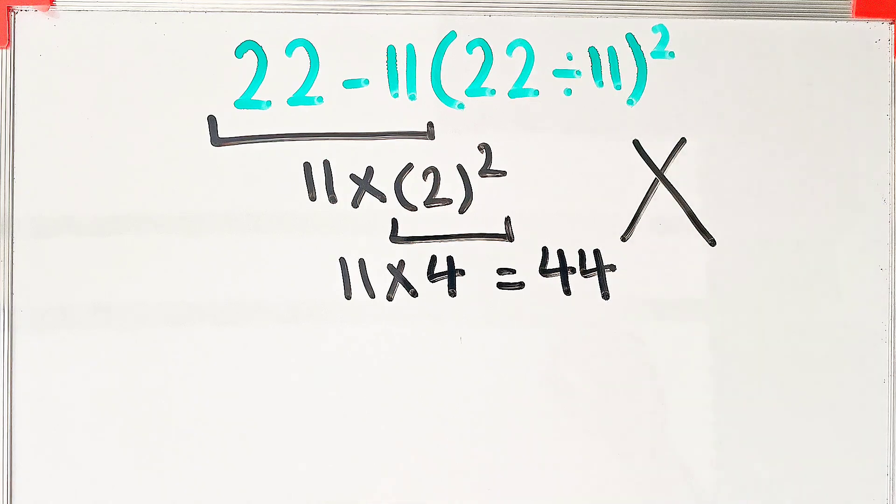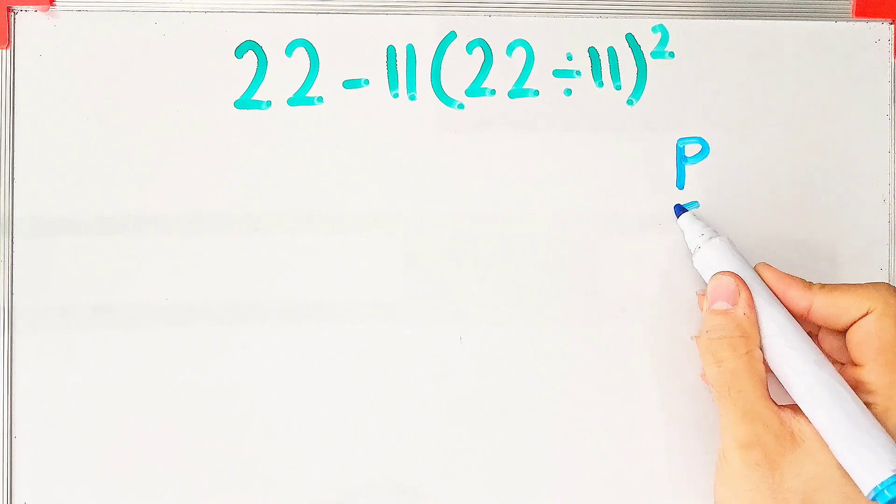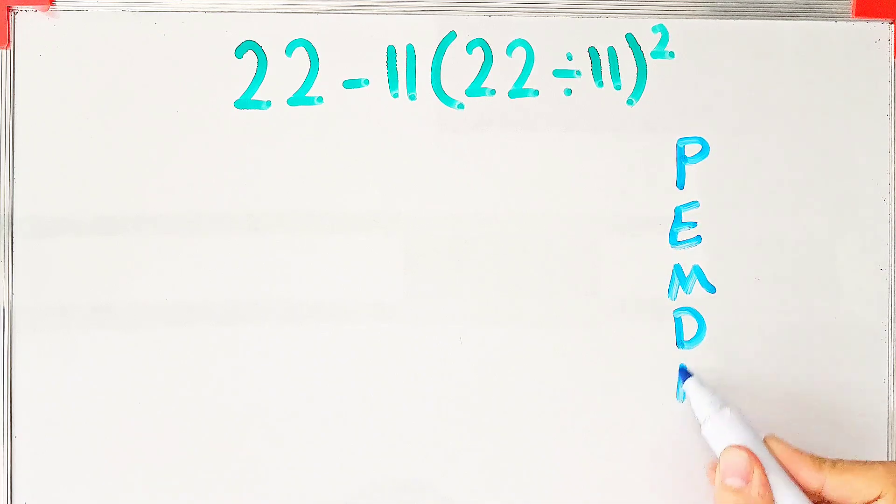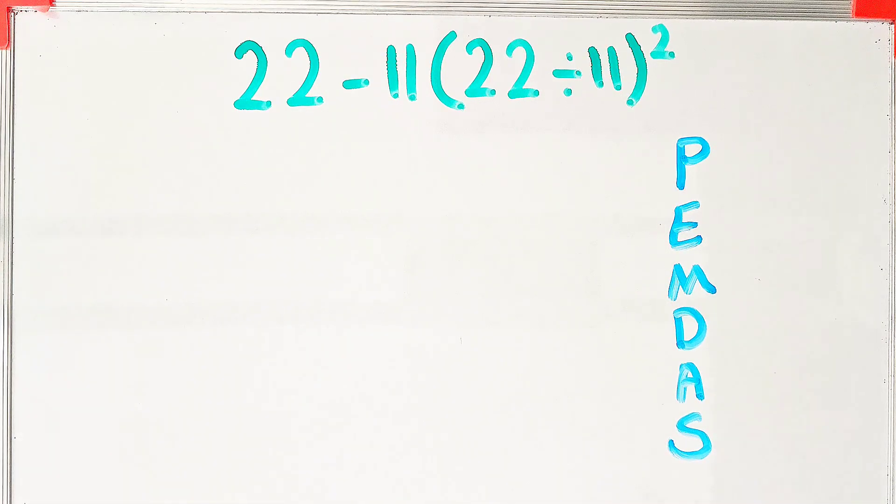Let's solve this question step by step together. To solve this question we need to follow the order of operations, which is PEMDAS. PEMDAS shows the priority of the mathematical operations. If you don't pay attention to this rule, you get the wrong answer.